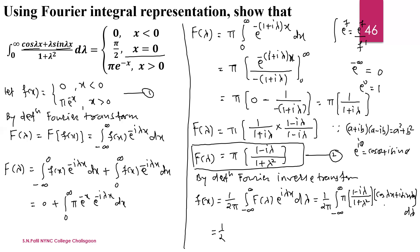So f(x) = (1/2π) times the integral from −∞ to +∞ of π(1 − iλ)/(1 + λ²) · (cos λx + i sin λx) dλ. Now in the numerator we have two complex numbers (a − ib) and (c + id) which we need to multiply out and simplify.